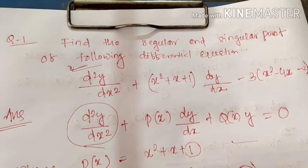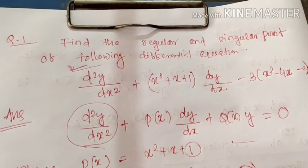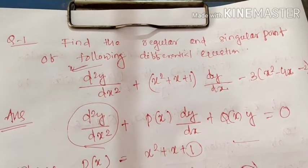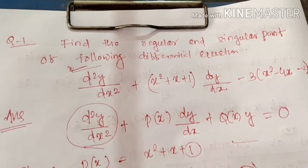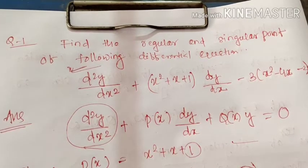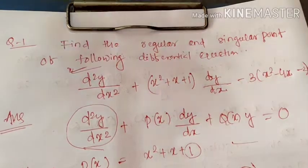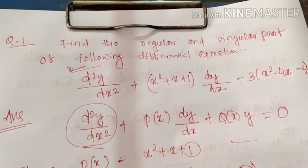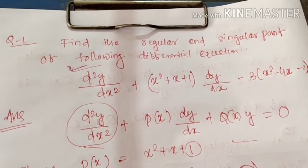For this equation, the values of p(x) and q(x) are not equal to infinity for any value of x. Hence any point is an ordinary point (regular point) of this differential equation.